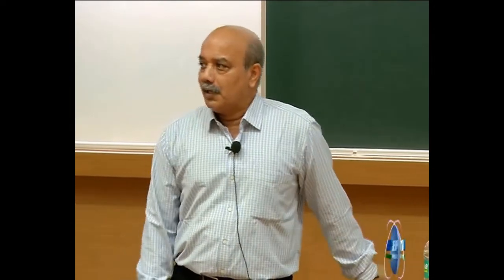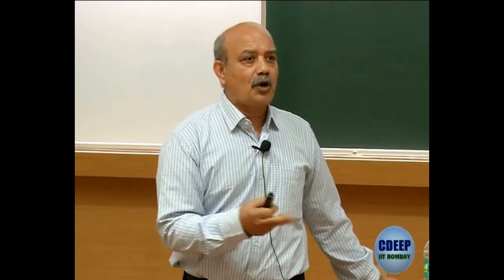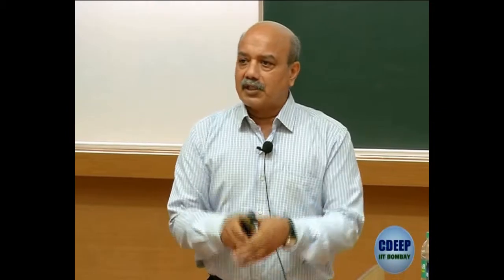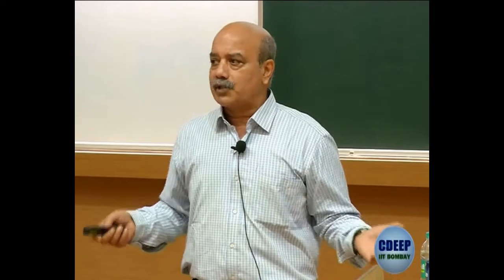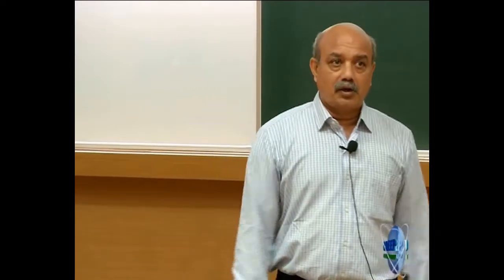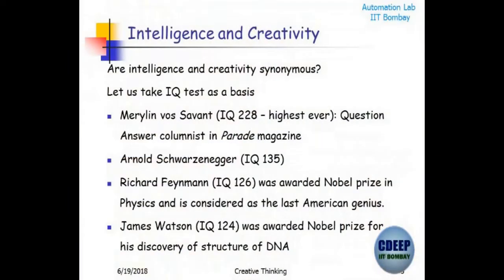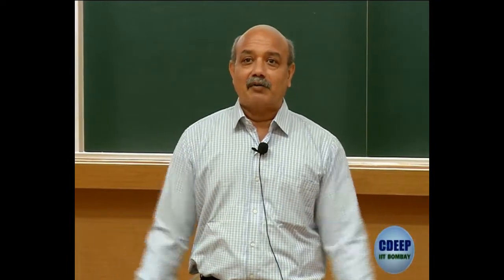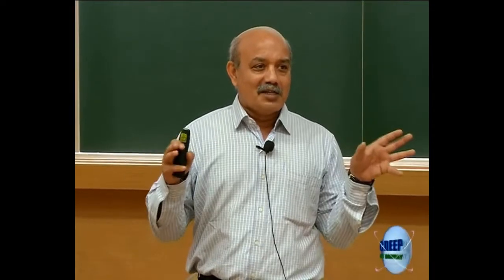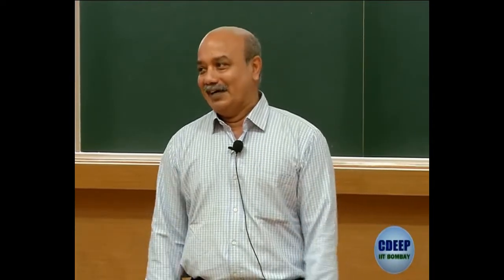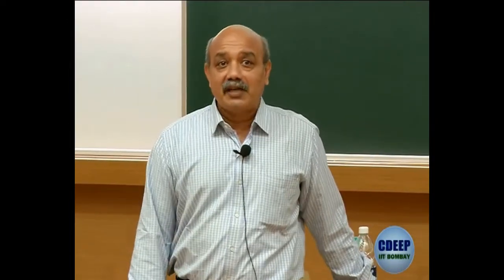Her job was to write columns in Parade magazine, which was not necessarily a creative job. She was a columnist who would write advisory columns - probably very intelligent but not extremely creative as far as her work was concerned. Arnold Schwarzenegger - you will not associate him with high intelligence, but his IQ is 135, far above the normal IQ. He is a very intelligent person. Of course, his intelligence was used when he was governor of California, but our image of him is this fighter. He has very high IQ.